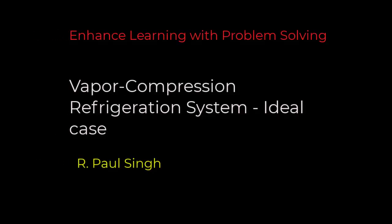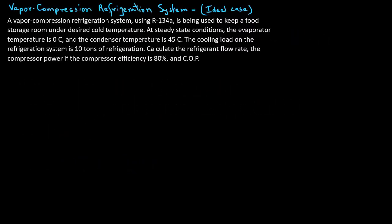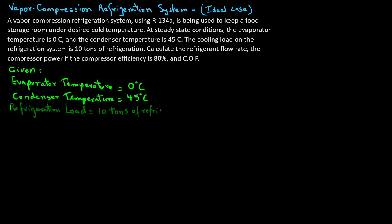In this numerical example we will look at a vapor compression refrigeration system, an ideal case. We have a refrigeration system using R-134a refrigerant to keep a storage room under a desired cold temperature at steady state conditions. The evaporator temperature is zero degrees Celsius, the condenser temperature is 45 degrees Celsius, the cooling load is 10 tons of refrigeration, and the compressor efficiency is 80%.